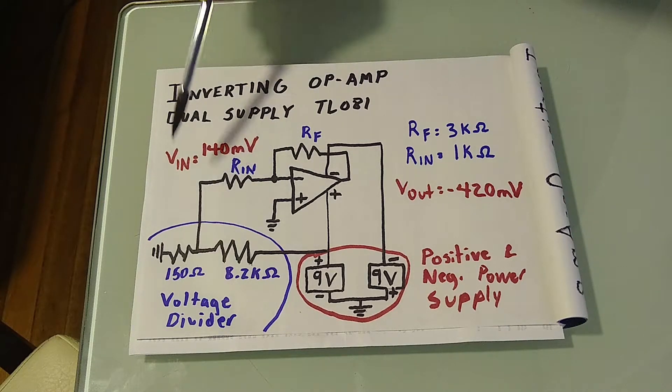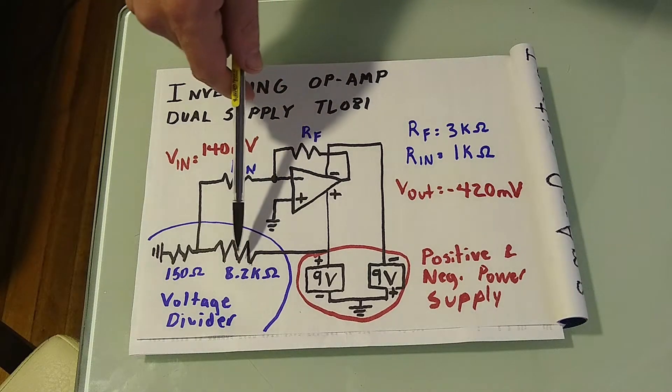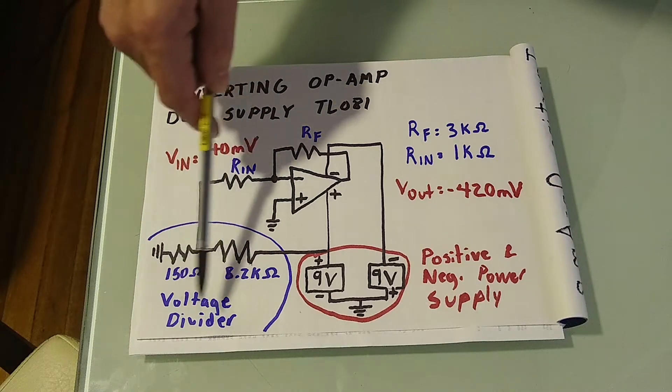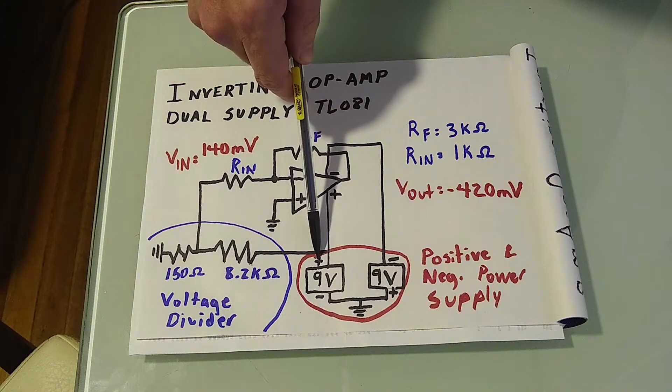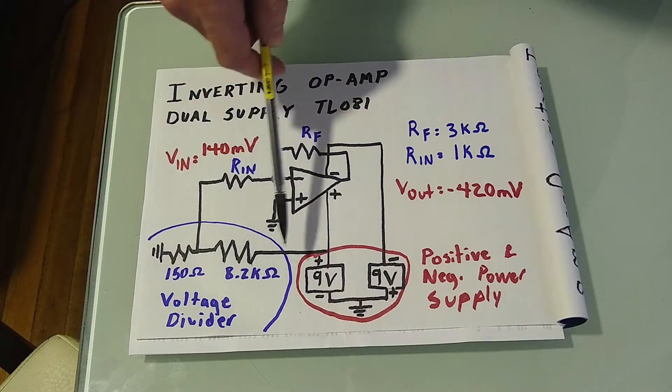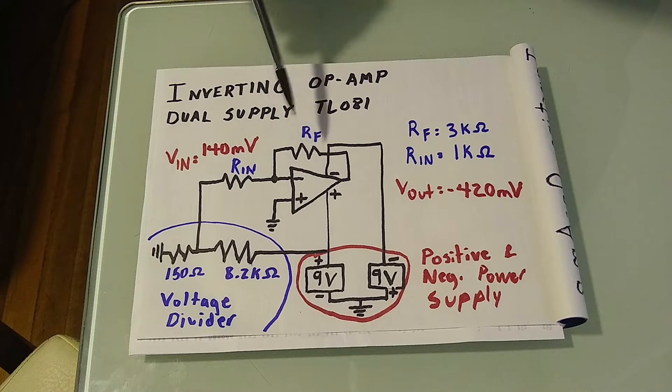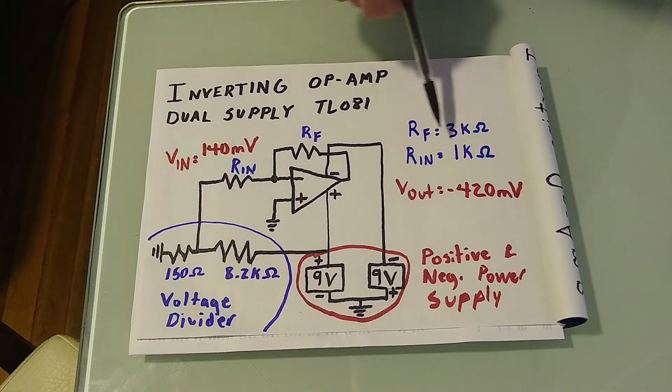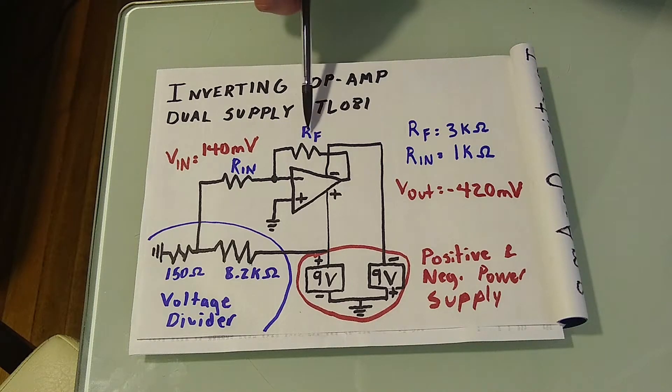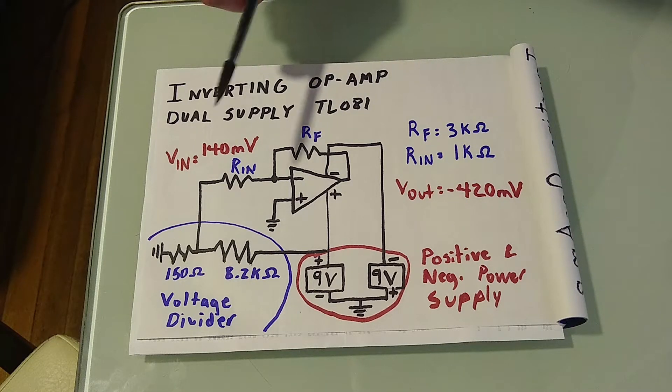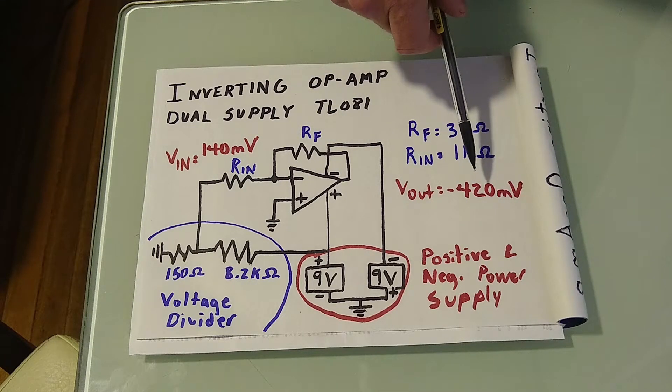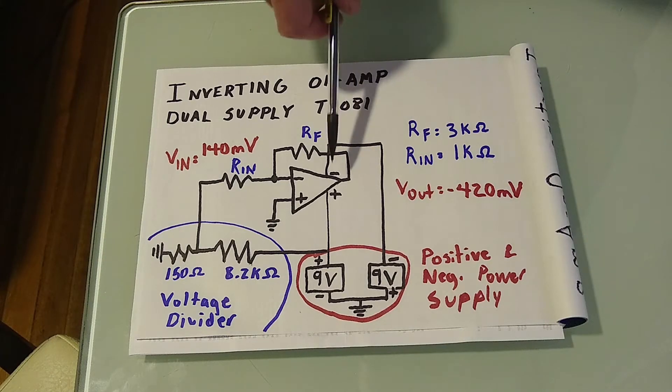To get our voltage in signal, we are going to rig up a voltage divider coming off this positive power supply, and it will give us 140 millivolts input. For our Rin, we are going to use a 1 kilohm resistor. For our Rf, a 3 kilohm resistor. And this, theoretically, will give us a negative 420 millivolts at the output.